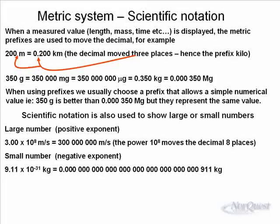So scientific notation is also used to show large or small numbers. Large numbers, as we recall from kilo, mega, they have a positive exponent. And you're multiplying the base of the number by ten to the eight, or in the second case, by ten to the minus 31. So three times ten to the eight, that's the speed of light, meters per second, is of course written in scientific notation as 3.00 times ten to the eight, or three with eight zeros following it.